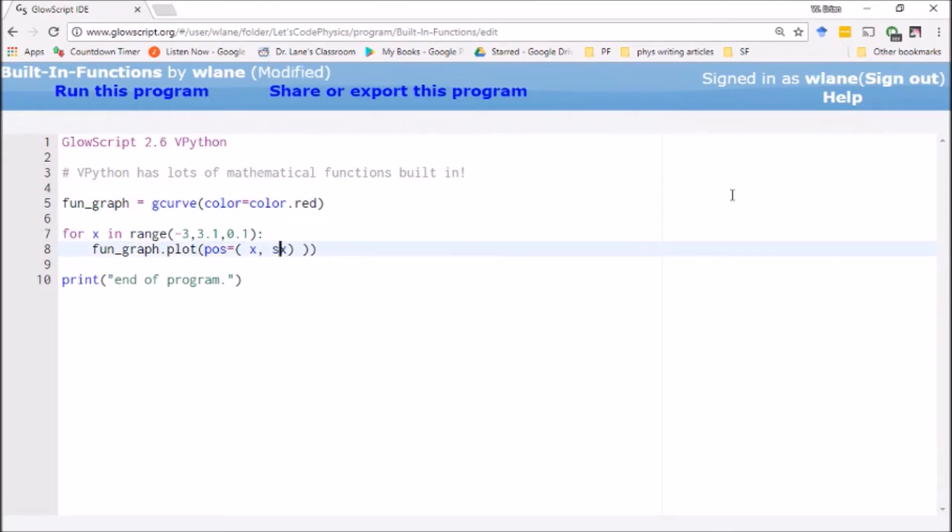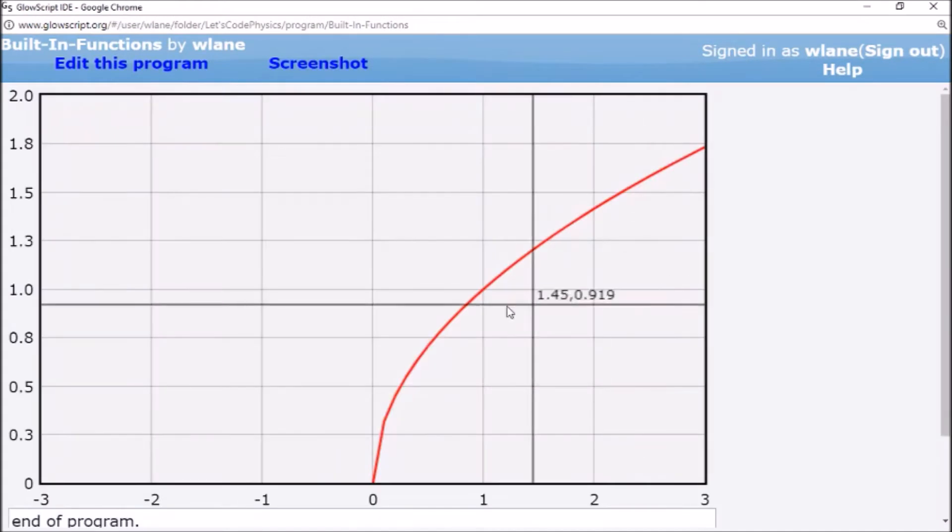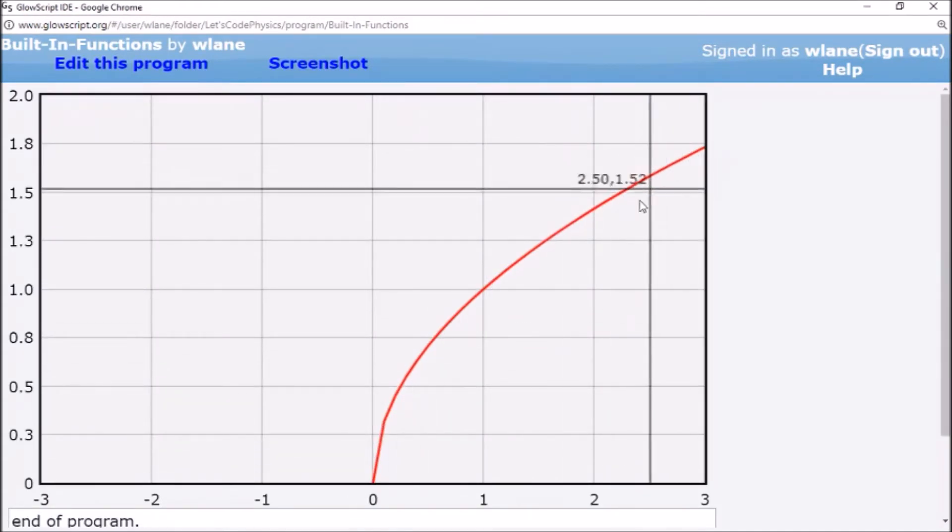There's something more versatile than that. You can also just use powers. You can do double asterisk to do to the one-half power. And you get the same graph because x to the one-half power is the same thing as square root of x.